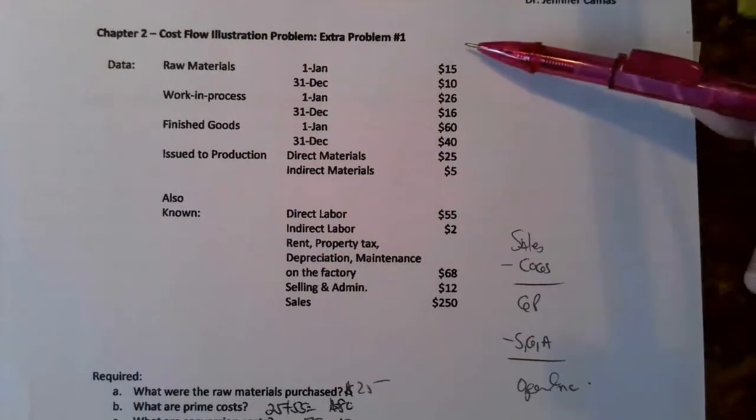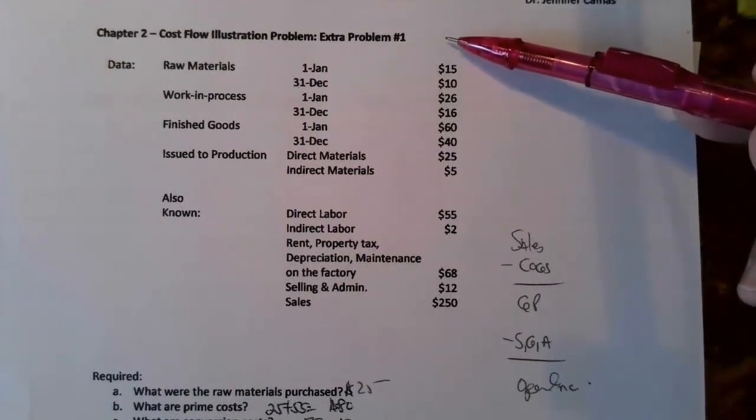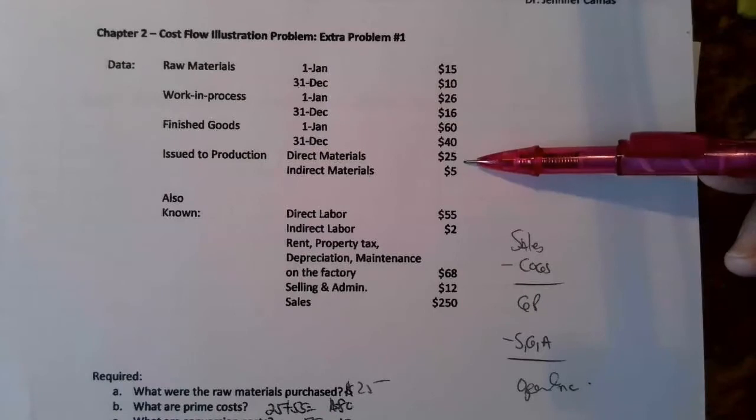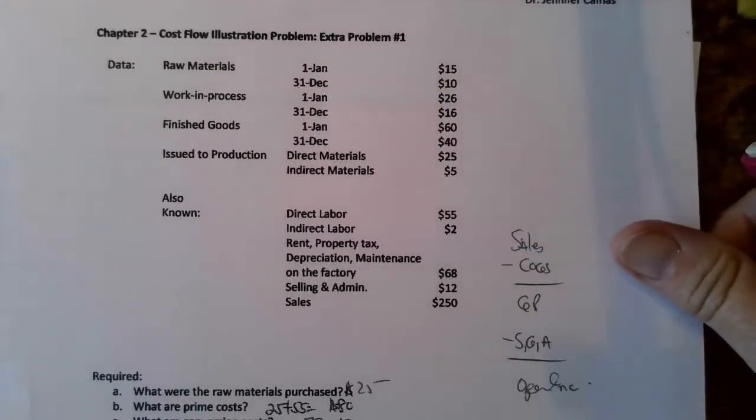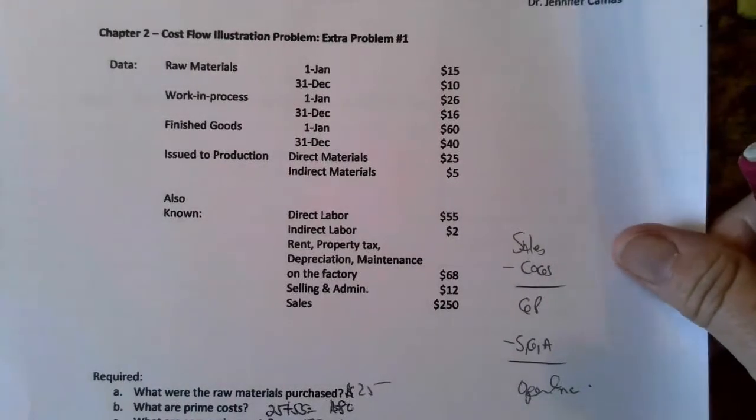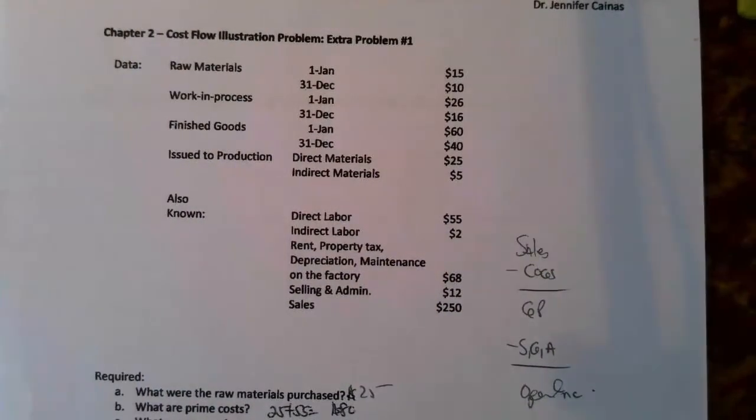Okay, this is Fosfalo illustration problem number one, and we start out with some simple balances here. I'm going to do this on another sheet of paper so it's just clear. You need to print this or have this out to work on. So what we start out with are a bunch of data for raw materials, work in process, finished goods, and then what's been issued to production.